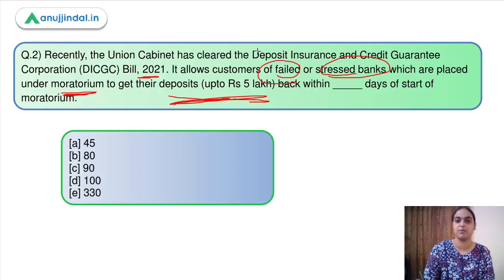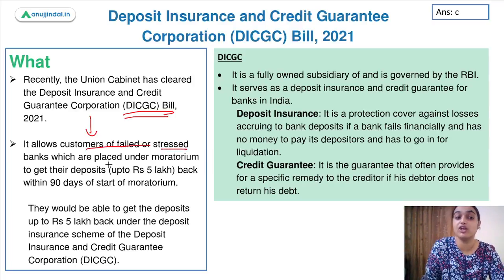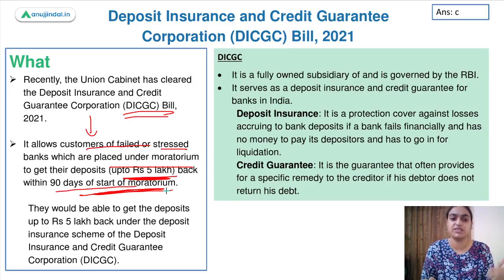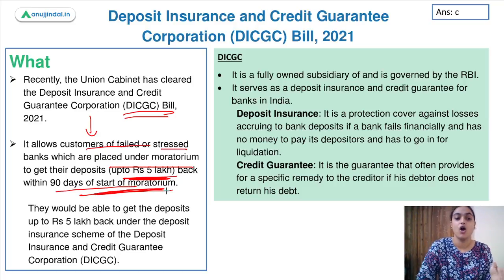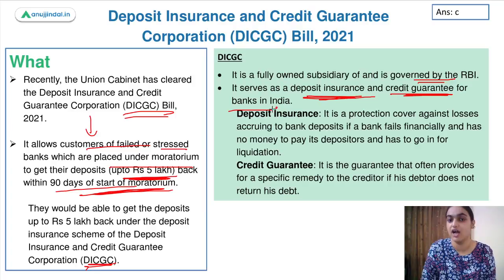Earlier there was no specific time limit within which that money would be given back, causing a lot of delays. Now this bill specifies a time period of 90 days — so the answer to this question is option C. DICGC is a fully owned subsidiary governed by RBI which provides deposit insurance and credit guarantee for banks in India.